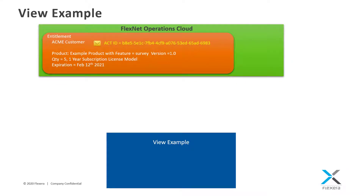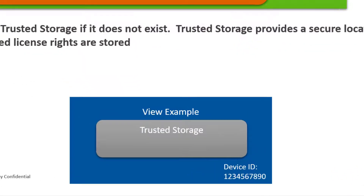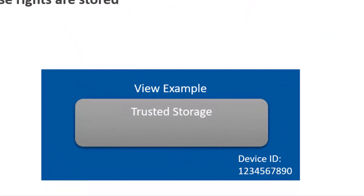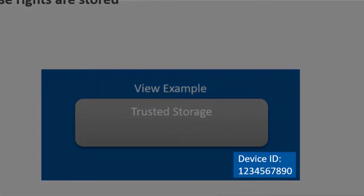Now let's take a look at the function of the view example provided in the toolkit. First, it will create what is called trusted storage if it does not yet exist. Trusted storage provides a secure location where encrypted license rights are stored on the target device. Trusted storage and the licenses contained in it are tied to a device ID. A device ID is a unique identifier for the device that will be licensed. This ID can be a MAC address, a user name, an ID of a connected piece of hardware, a unique text string, etc.